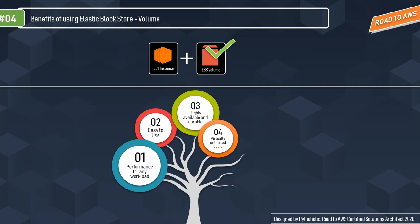The fifth benefit is security. EBS is built to be secure for data compliance. Newly created EBS volumes can be encrypted by default with a single setting in your account. EBS volumes support encryption of data at rest, data in transit, and all volume backups. EBS encryption is supported by all volume types, includes built-in key management infrastructure, and has zero impact on performance.